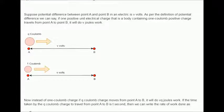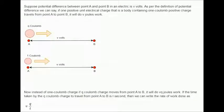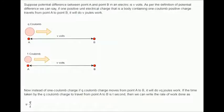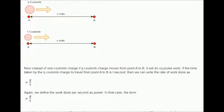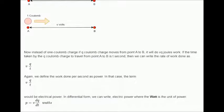If the time taken by the Q Coulomb charge to travel from point A to B is T second, then we can write the rate of work done as follows. And again, we define the work done per second as power. In that case, the term would be electrical power. In differential form, we can write electric power where the watt is the unit of power.